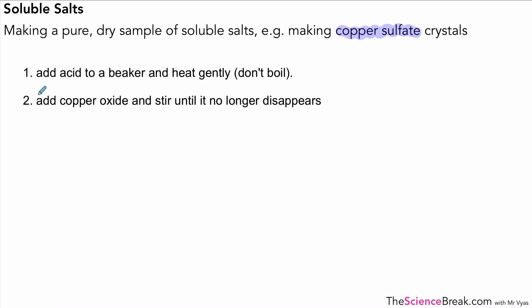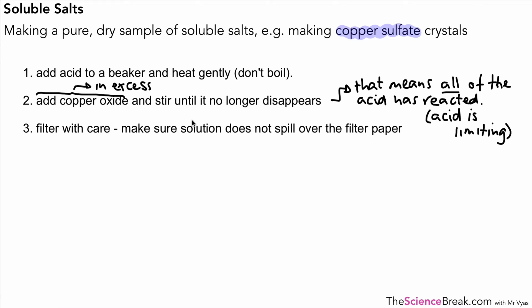We would add our copper oxide and stir it till it no longer disappears. In other words, we would add copper oxide in excess. The reason we do that is to make sure that all of the acid has reacted. If you remember back from a few videos back, we could describe the acid as the limiting reagent. The acid is limiting because the reaction stops when the acid has run out.